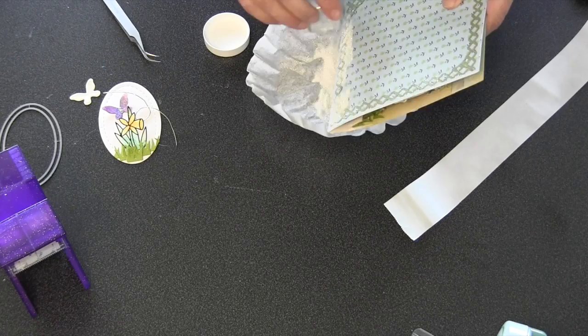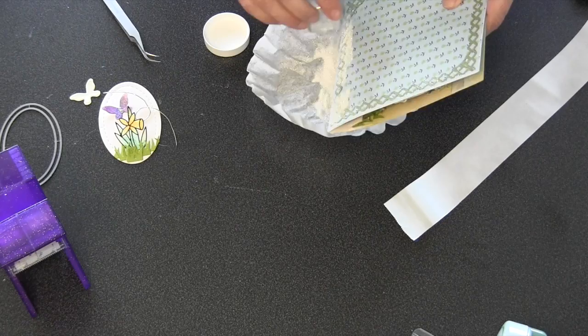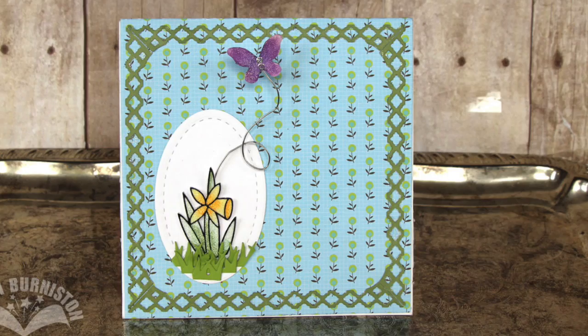Now I'm going to go to my warm diamond microfine glitter and just dump that around the edges. What it's going to do is just going to stick to all the leftover Xyron adhesive that I just let stay on there.